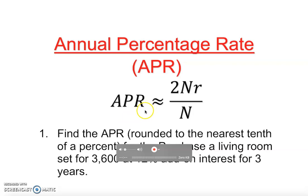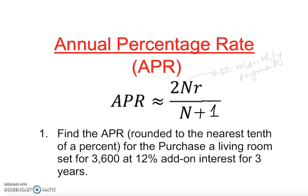Annual Percentage Rate can be calculated by this formula: APR ≈ 2Nr/(N+1). So what does this mean? N is the number of payments, number of monthly payments, and r is the rate.